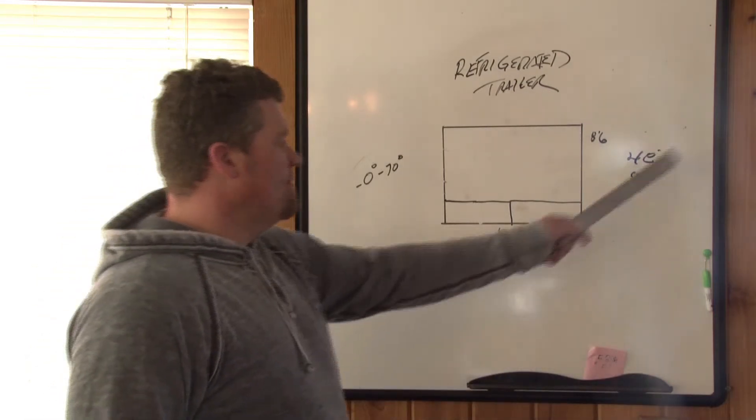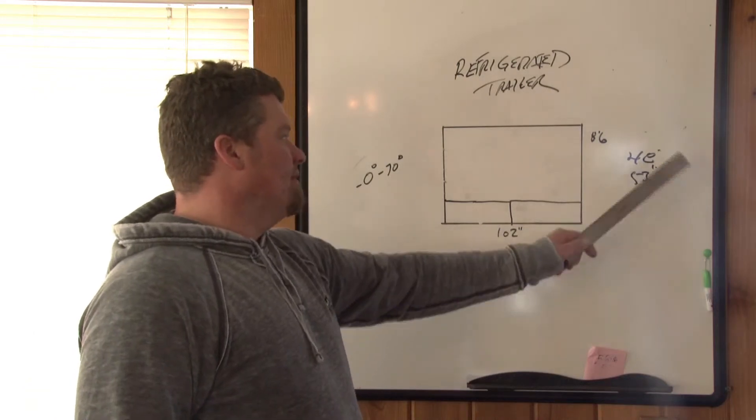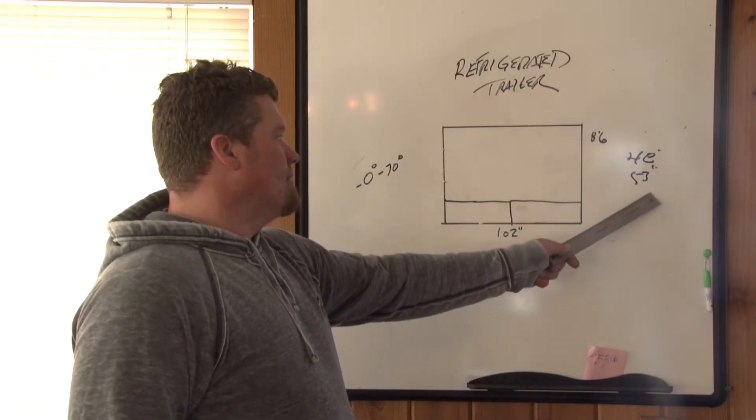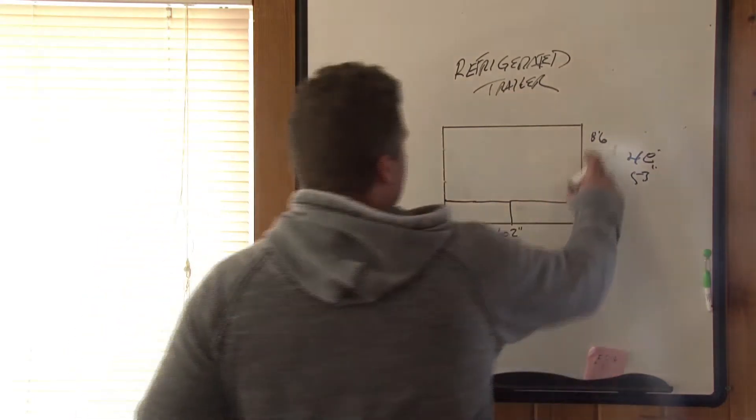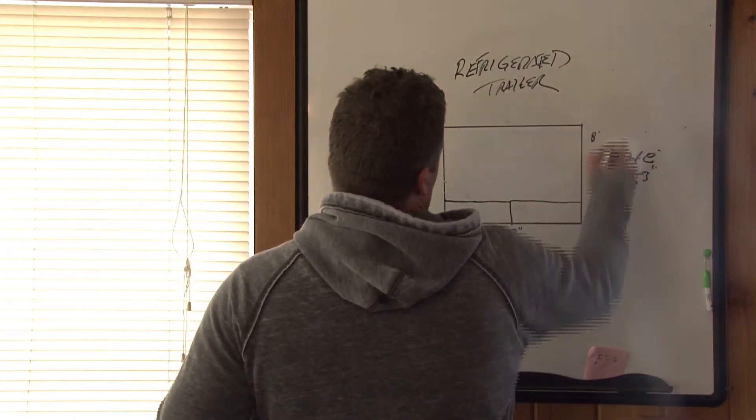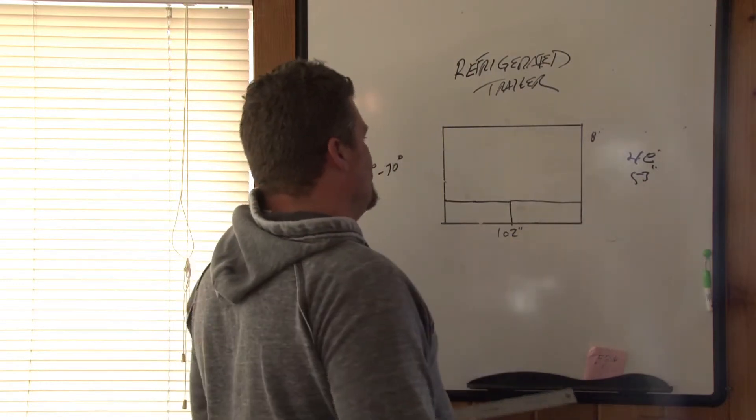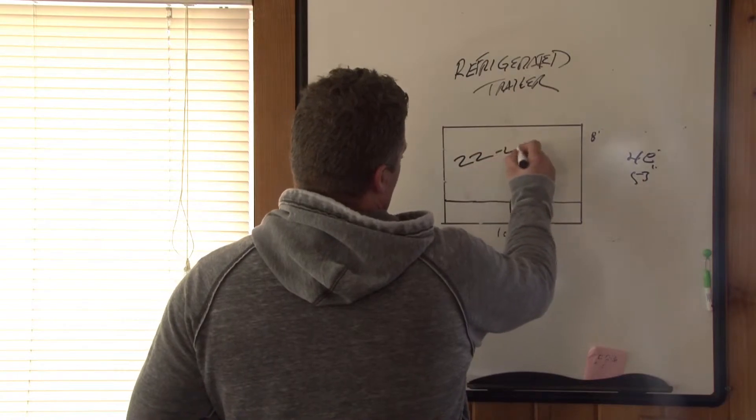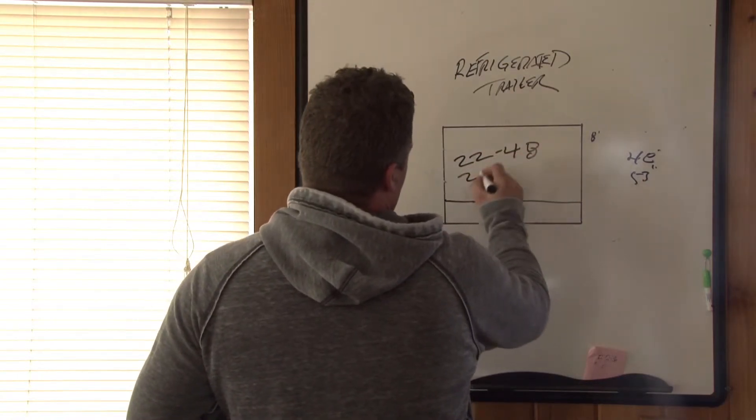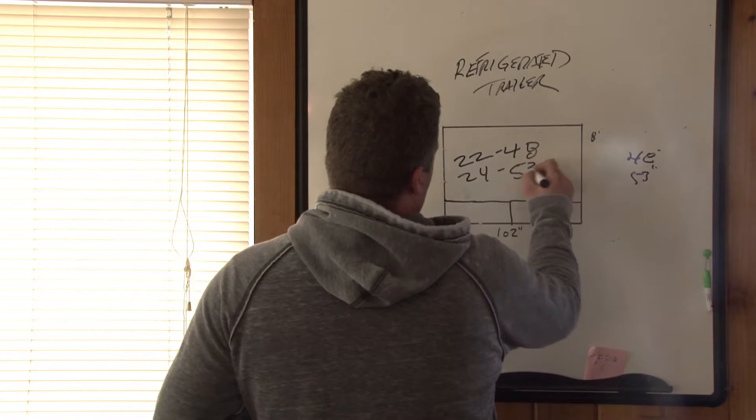You get 22 pallets in a 48 foot. They come in 48 feet and 53 foot. You usually get about 8 to 86 inches in the box tall depending on if you can stack them or not. Usually get about 22 pallets in a 48 and 24 pallets in a 53.